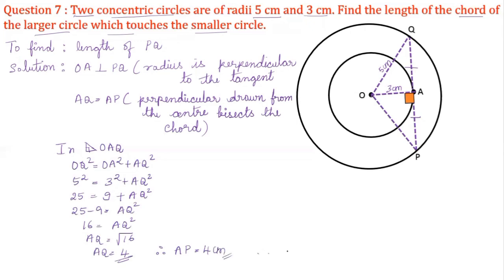Since AQ equals AP, and we want the length of the chord PQ: PQ equals AP plus AQ, that is 4 plus 4 equals 8 cm. So the length of the chord of the larger circle which touches the smaller circle is equal to 8 cm.